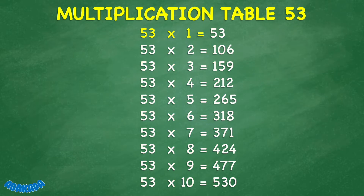53 times 1 equals 53. 53 times 2 equals 106. 53 times 3 equals 159. 53 times 4 equals 212.